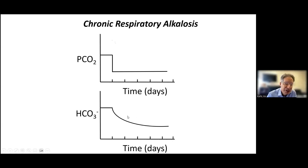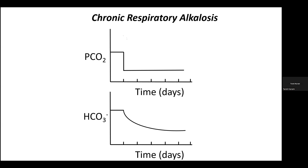A student asks: why have we observed that in respiratory alkalosis or acidosis, the change in bicarbonate relative to 10 units of PCO2 is numerically different in the chronic state — 3.5 versus 5? Why, if it's just shifting back and forth along the same equation?